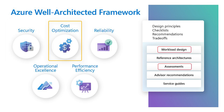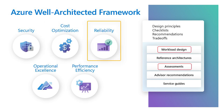The second pillar is cost optimization. Typically this is about maximizing the value of your spend, but in the case of SaaS it's also about relating that value to revenue, so you don't find yourself in a situation where your costs might be increasing without a corresponding increase in revenue, which is bad for a business. The third pillar is reliability. When you're building SaaS, the solution really is your business, and it's really important to make sure the solution is sound, also because your customers are going to be relying on it potentially for their own business as well.